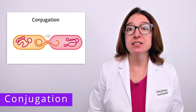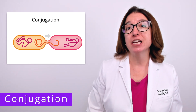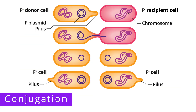Next, we have conjugation, which involves the transfer of DNA from one bacterial cell to another through direct contact using a conjugation pilus. Let's take a look at how this process works using an illustration from our microbiology flashcard deck. The F-plasmid is a small circular double-stranded DNA molecule located independent from the bacterial chromosome. Plasmids often contain genes that increase a cell's virulence, such as genes that encode for antibiotic resistance or the production of toxins. An F-plasmid also contains genes that allow the cell to conjugate. The F-positive, or donor cell, is a bacterial cell that contains the F-plasmid and is therefore able to form an F-pilus and conjugate.